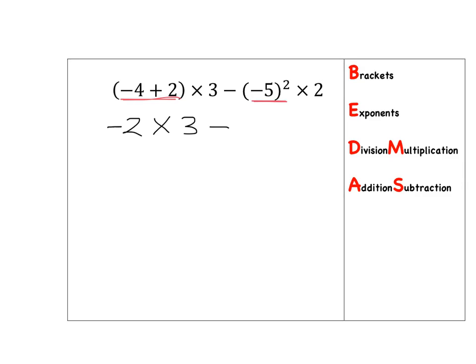Now I calculate negative 5 squared. Remember, it's the whole negative 5 that is squared — it means negative 5 multiplied by negative 5. Negative times negative gives me a positive, so I get 25, and then I still have the times 2 to deal with. BEDMAS: I've dealt with my brackets and my exponents, so the next step is division or multiplication.